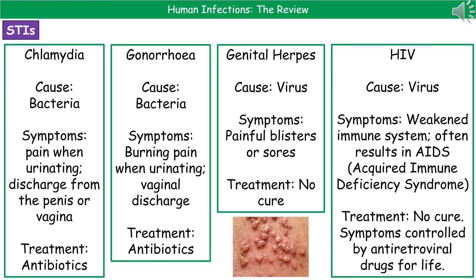Genital herpes is our first viral STI. It causes painful blisters or sores, and there is no cure. During any flare-up, you need to avoid any direct contact with the sores themselves. HIV is also caused by a virus. The key symptom is a weakened immune system, which often results in AIDS long-term. There is no cure for HIV, but symptoms can be controlled using antiretroviral drugs, which are taken for the rest of your life.